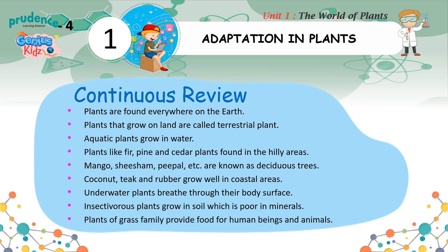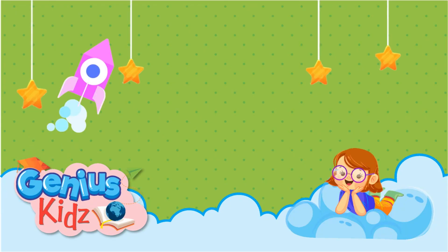Continuous review: Plants are found everywhere on the earth. Plants that grow on land are called terrestrial plants. Aquatic plants grow in water. Plants like fir, pine, and cedar are found in hilly areas. Mango, shisham, peepal, etc. are known as deciduous trees. Coconut, teak, and rubber grow well in coastal areas. Underwater plants breathe through their body surface. Insectivorous plants grow in soil which is poor in minerals. Plants of the grass family provide food for human beings and animals.